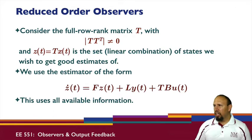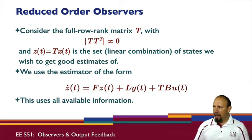Notice here, instead of having A minus LC, because this has fewer states than our original system, we can't actually do A minus LC because that's the wrong dimension. So we just form a matrix F here. This uses U and Y in forming its estimates. We have everything that we need; now we just need to come up with F, L, and T.